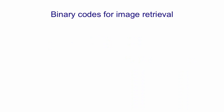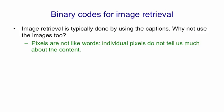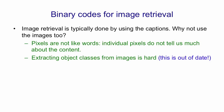Now we're going to look at using binary codes for image retrieval. Image retrieval at present is typically done using the captions. But why not use the images too? They obviously contain a lot more information than the captions. The basic problem is that pixels are not like words — individual pixels don't tell us much about the content of an image. Obviously, if we could recognise the objects in the images, then we'd have things that were much more like words. But recognising objects is hard.